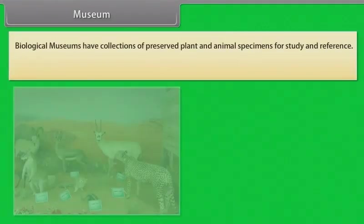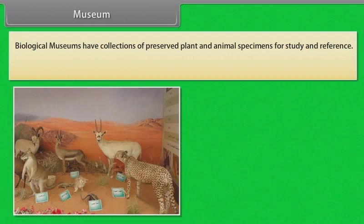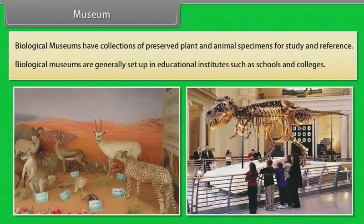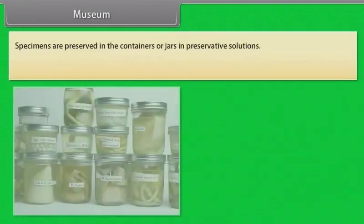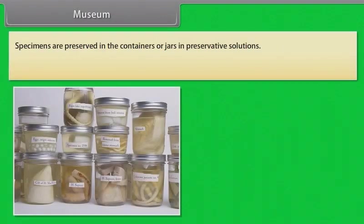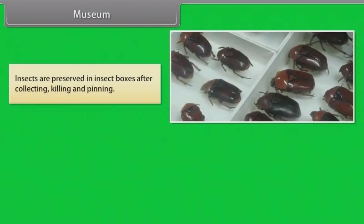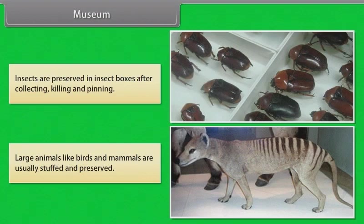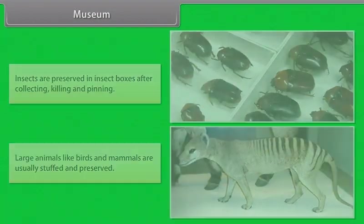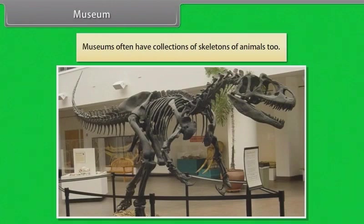Biological museums have collections of preserved plant and animal specimens for study and reference, and are generally set up in educational institutes such as schools and colleges. Specimens are preserved in containers or jars in preservative solutions, or as dry specimens. Insects are preserved in insect boxes after collecting, killing and pinning. Large animals like birds and mammals are usually stuffed and preserved. Museums often have collections of animal skeletons too.